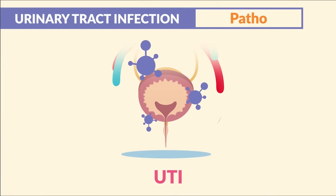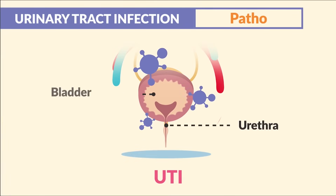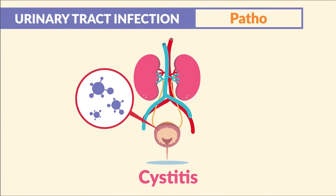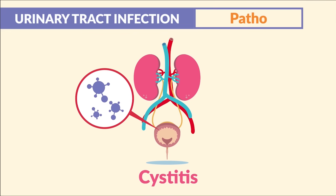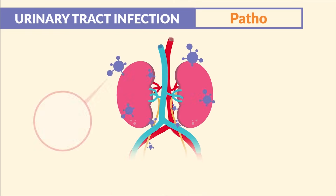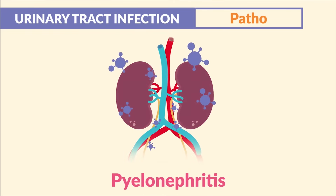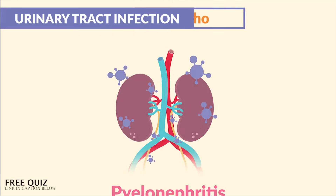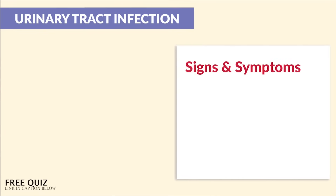A UTI is a urinary tract infection, typically in the urethra and the bladder. Cystitis is just a bladder infection, and if that infection gets bad enough it can migrate and climb the ureters to infect the kidneys, known as pyelonephritis — a kidney infection — which is far more serious.